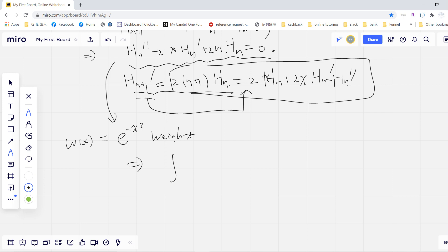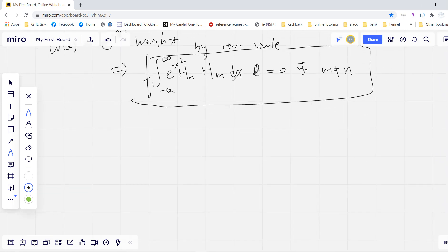So this implies that the integral of H_m times H_n e^{-x^2} dx from negative infinity to infinity will be zero if m is not the same as n, by Sturm-Liouville property. So this is the previous result.